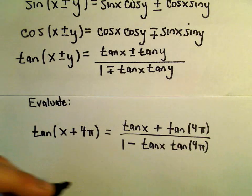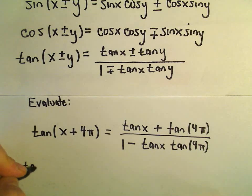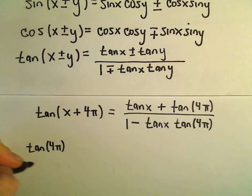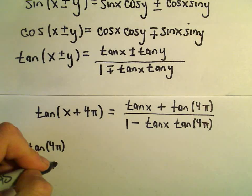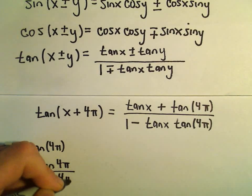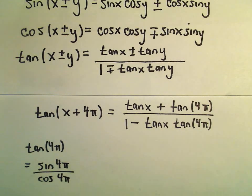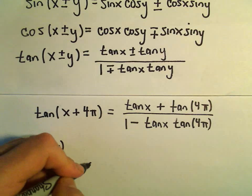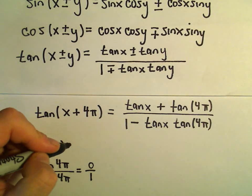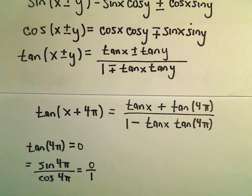But tangent of 4π, that's just going to be sine of 4π over cosine of 4π. Well, sine of 4π is going to equal 0. Cosine of 4π is going to equal 1. So tangent of 4π simply reduces to 0.